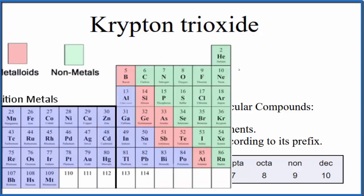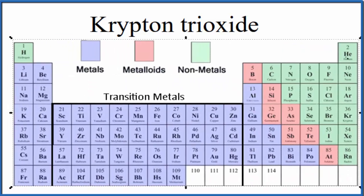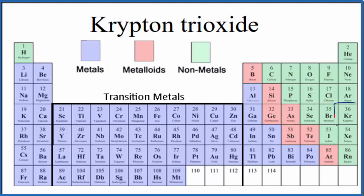So if we look at the periodic table organized by metals, nonmetals, and metalloids, we can find krypton, that's Kr, that's right here, that's a nonmetal.